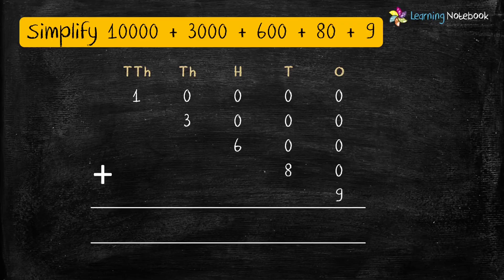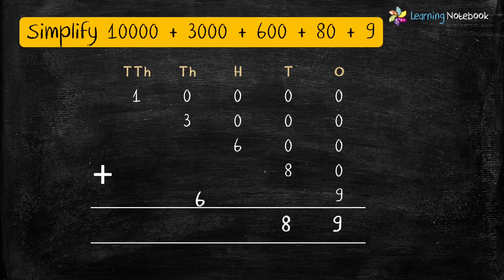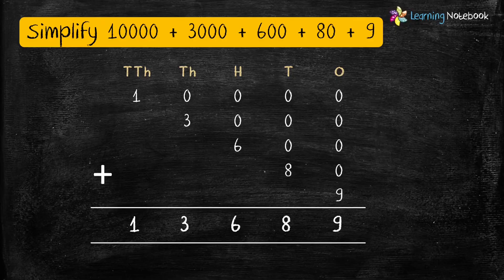Let's add the digits at the 1's place — we get 9. Then add the digits at the 10's place — we get 8. In the same way, add the digits at the 100's place — we get 6. Then add the digits at the 1,000's place — we get 3. And at the 10,000's place — which is 1. So we get the number as 13,689.